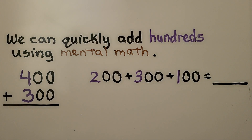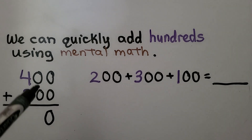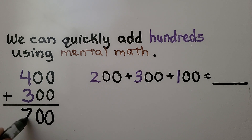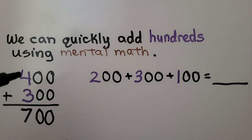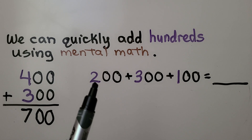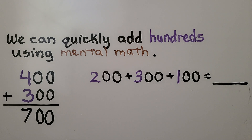We can quickly add hundreds using mental math. We have zero ones — zero plus zero is zero. We have zero tens, that's zero. We have four hundreds plus three hundreds — that's seven hundreds. We can just look at this and see because there's no tens or ones. We have four plus three in the hundreds place — that's seven hundred. And we can add it as a number sentence: we can add two, three, and one — that's six in the hundreds place. There are no tens and ones. We have six hundred.